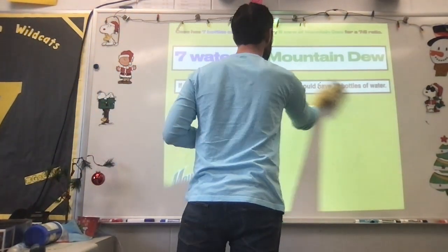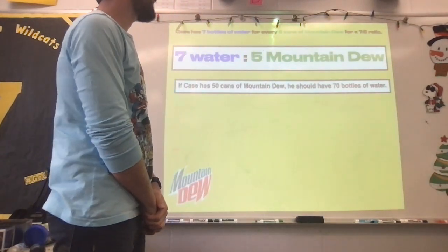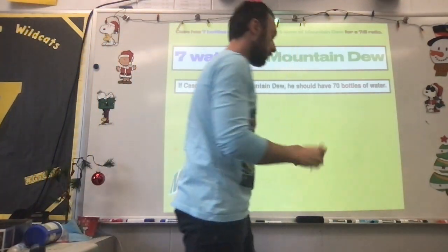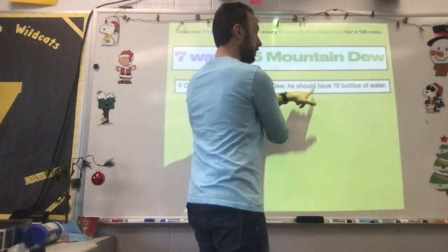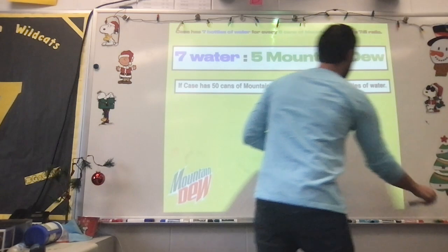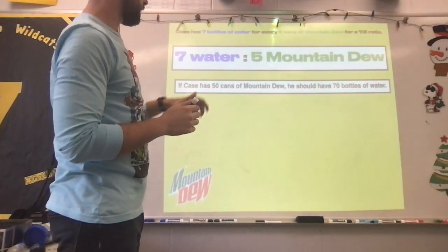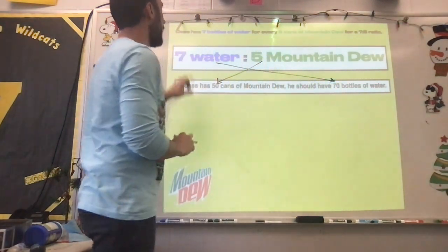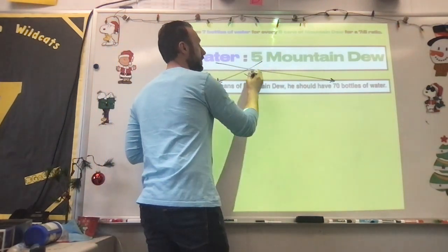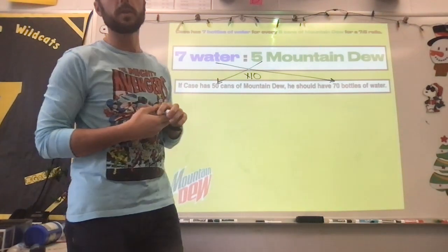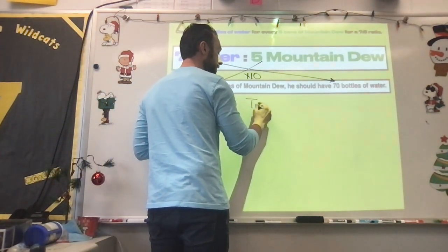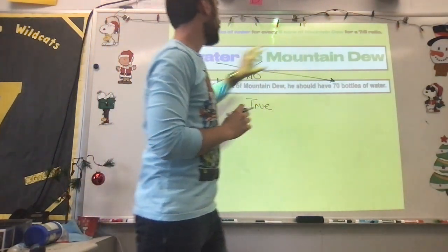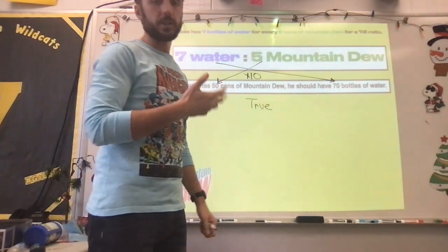Now it says, what happens if Case has 50 cans of Mountain Dew? He should have 70 bottles of water. Now this is where we have to be careful because we have to make sure our labels are in the correct spot. So we flip-flopped Mountain Dew and bottles of water from the previous questions. So when we draw our lines, we have to make sure we're going to the correct spot. Water, water. So seven becomes 70 and five becomes 50. We're multiplying those both by 10. And since they both have the same factor, we would say those are equivalent ratios. So this would be a true statement.